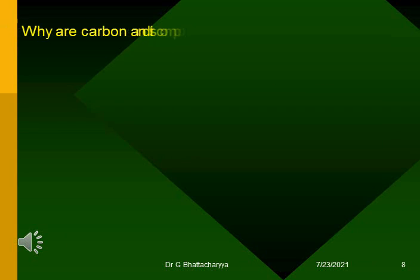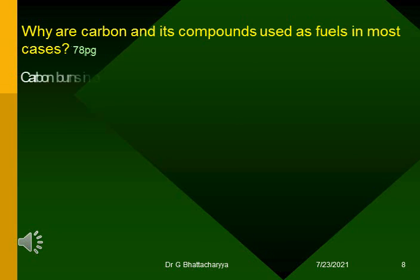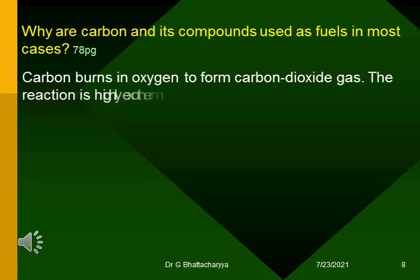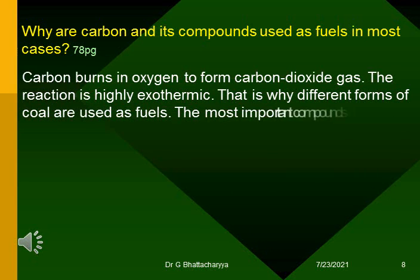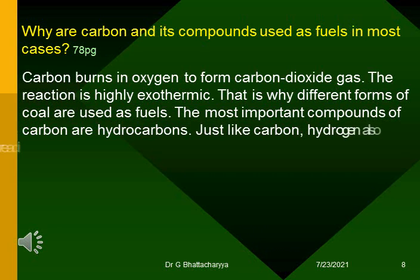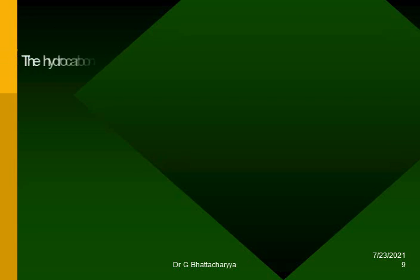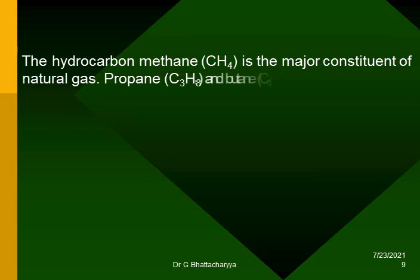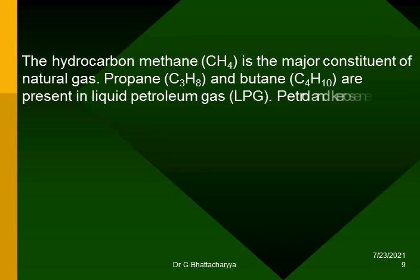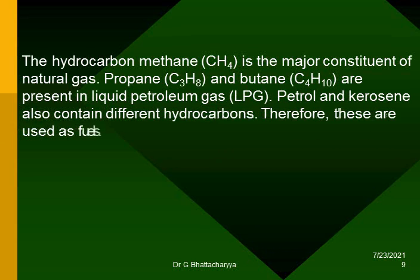Why are carbon and its compounds used as fuels in most cases? Carbon burns in oxygen to form carbon dioxide gas, and the reaction is highly exothermic. That is why different forms of coal are used as fuels. The most important compounds of carbon are hydrocarbons. Hydrogen also readily burns in oxygen or air to form water and heat. The hydrocarbon methane (CH4) is the major constituent of natural gas. Propane (C3H8) and butane (C4H10) are present in liquid petroleum gas (LPG). Petrol and kerosene also contain different hydrocarbons, and therefore these are used as fuels.